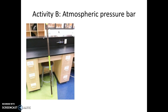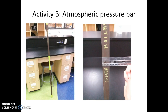The next activity, Activity B, involves the atmospheric pressure bar that you can see here — essentially a big heavy metal bar. The lab asks you to measure the dimensions on the narrow end of the bar using the inches side of a ruler. What you should find is that the area on that small end of the bar is approximately one square inch.